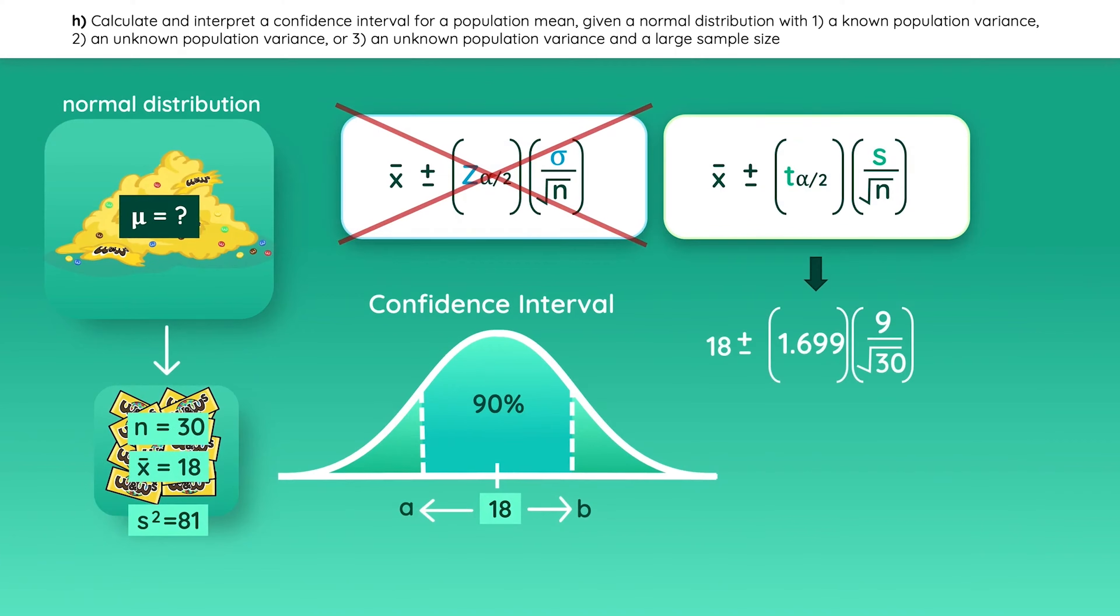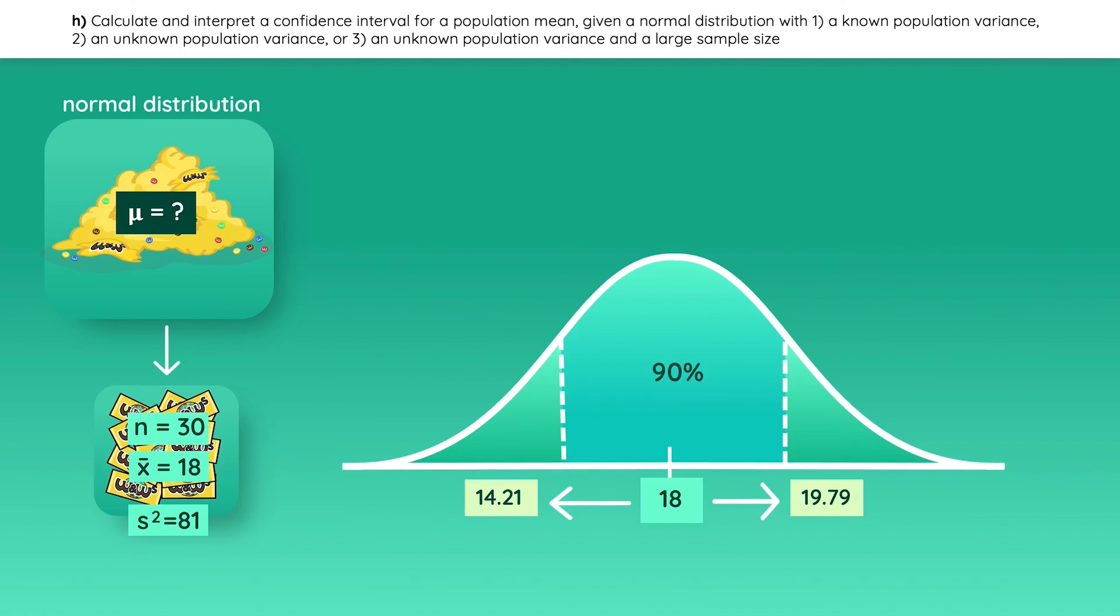Here's the calculation. The point estimate is the sample mean, and the critical value is found using the t-table. A common mistake is to enter the sample variance instead of the standard deviation when calculating the standard error, so be careful. And now let's just solve the equation. These are the upper and lower values of the confidence interval. Now you can confidently go up to your boss and say that you are 90% confident that the population mean falls between 14.21 and 19.79 pieces of chocolate per bag.